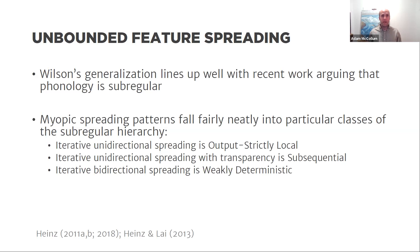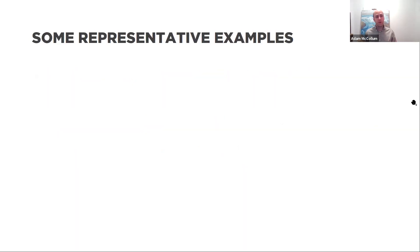Myopic spreading patterns fall nicely within a number of subregular classes in the Chomsky hierarchy. Iterative unidirectional spreading is output strictly local. Iterative unidirectional spreading with transparency — where some segments are skipped — is subsequential. And iterative bidirectional spreading is weakly deterministic.